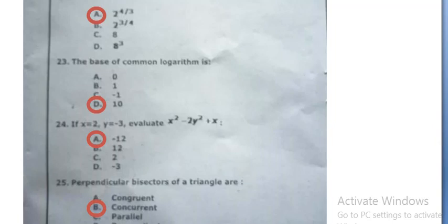If x is equal to 2, y is equal to minus 3, evaluate x square minus 2y square plus x. Minus 12, option A.